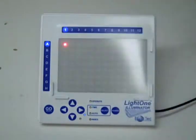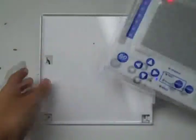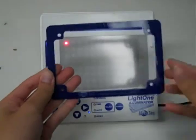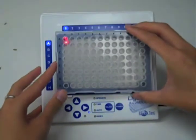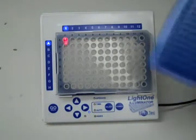This is what it looks like. It includes the LightOne unit itself, a stand, a viewing frame, and a foot pedal.